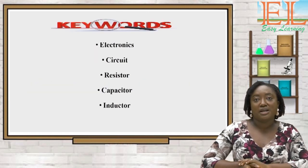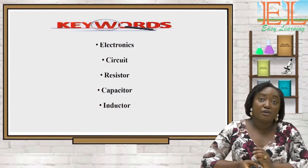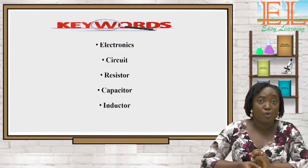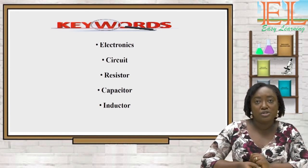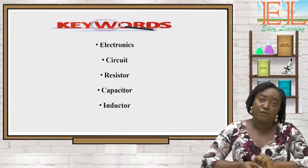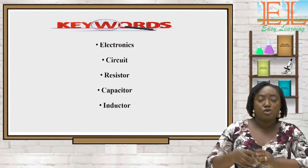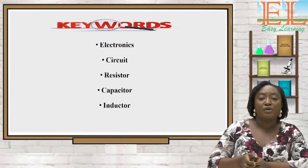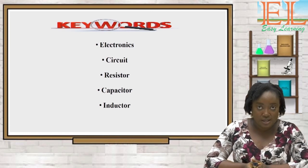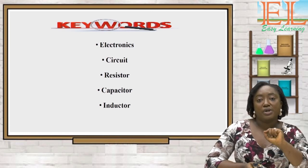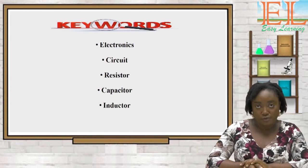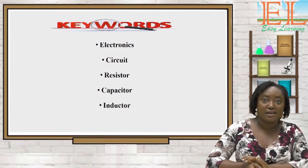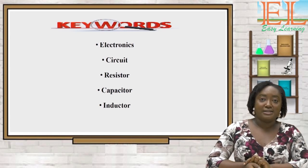These are some of the key words we will encounter in our lesson today. The first word is electronics. In the field of electronics, scientists study the flow of electrons and try to control their behavior using devices that either resist the flow, carry, store, or steer the electrons. When electrons move around a closed loop, we call these circuits — our next key word, electronic circuit: a closed loop around which electrons travel.